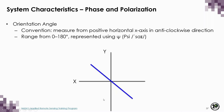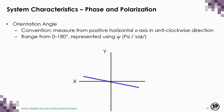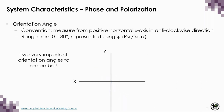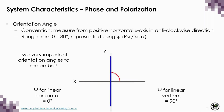The electric field can oscillate at any angle, and we can measure the wave's orientation angle — the angle made between the wave and the horizontal x-axis, measured anti-clockwise — represented by the Greek letter psi (ψ). Values range from 0 to 180 degrees. Two important orientation angles are linear horizontal at 0 degrees and linear vertical at 90 degrees.